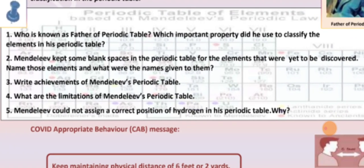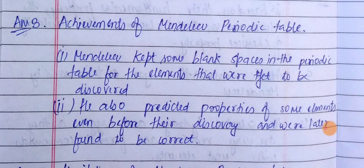Question: Write the achievements of Mendeleev's Periodic Table. Answer: Mendeleev kept some blank spaces in the periodic table for elements that were yet to be discovered, and he predicted their properties before discovery, which were later found to be correct.